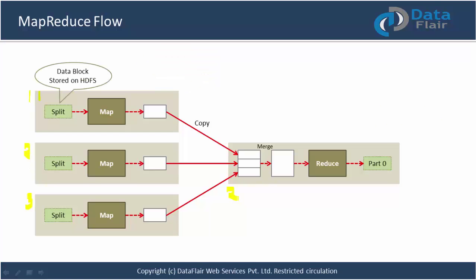A split is the logical representation of a block — we'll discuss splits in detail in the advanced MapReduce session, but for now note: split equals block. The very first key point: one split is processed by one mapper. Suppose we have a file of size 640 MB and the block size is 64 MB — how many blocks will there be? Ten blocks. How many mappers will run for this job? Ten mappers — one block is processed by one mapper, so ten blocks are processed by ten mappers.